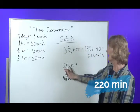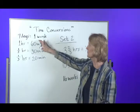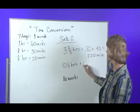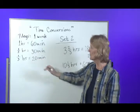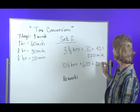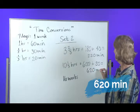Next one. Ten and one-third hours. Well, ten hours would be ten of these, so that'd be 600 minutes, and then one-third of an hour is 20 minutes. So the grand total would be 620 minutes.